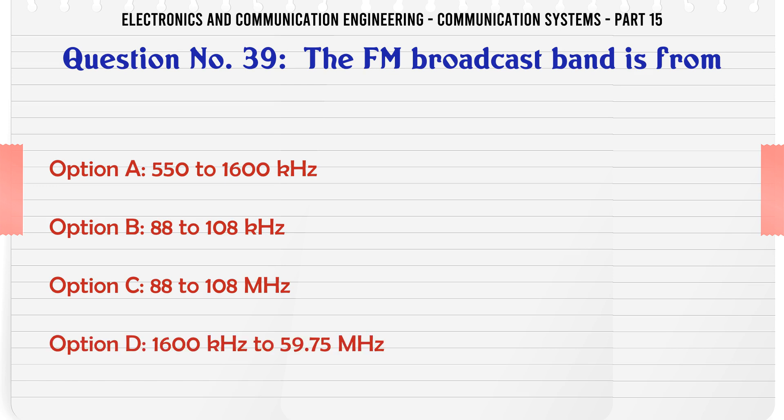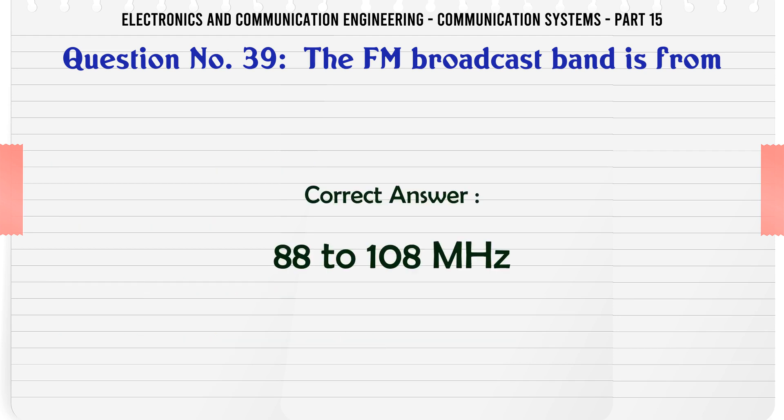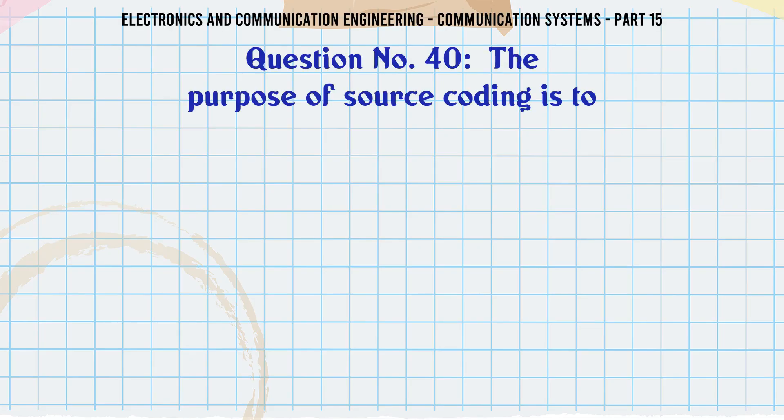The FM broadcast band is from: A 550 to 1600 kHz, B 88 to 108 kHz, C 88 to 108 MHz, D 1600 kHz to 59.75 MHz. The correct answer is 88 to 108 MHz.